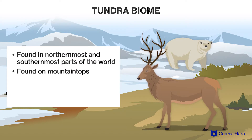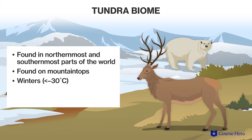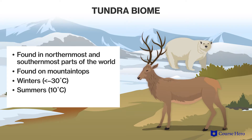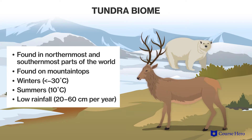This biome is characterized by cold winters with average temperatures falling below minus 30 degrees Celsius and cold summers with average temperatures of 10 degrees Celsius. There's very little precipitation — only 20 to 60 centimeters of rain a year — and much of what falls freezes on the ground.